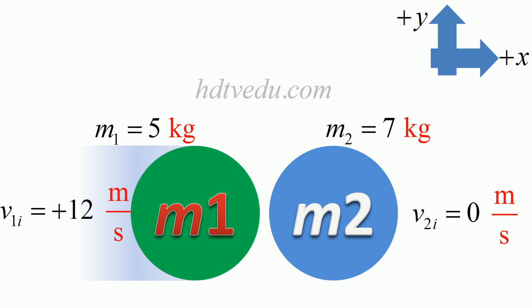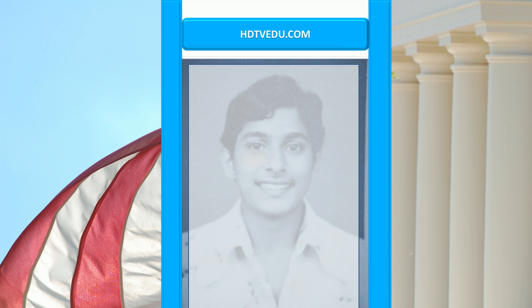Again, don't forget: mass m1 is 5 kg, moving to the right at 12 meters per second. Mass m2 is 7 kg, at rest. Welcome to hdtvedu.com, direct and simple education in seconds.